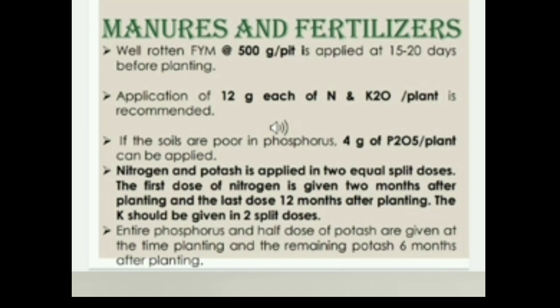Manures and Fertilisers: Well-rotten FYM at the rate of 500 grams per pit is applied 15 to 20 days before planting. Application of 12 grams each of Nitrogen and K₂O per plant is recommended. If the soil is poor in phosphorus, then 4 grams of P₂O₅ per plant can be applied. Nitrogen and Potash are applied in 2 equal split doses. The first dose of Nitrogen is given 2 months after planting and the last dose 12 months after planting. The entire phosphorus and half dose of Potash are given at planting, and the remaining Potash 6 months after planting.